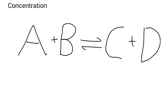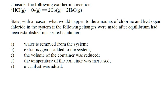Let's apply some of this knowledge to problems. Consider the following exothermic reaction — exothermic moving in the forward direction. State with a reason what would happen to the amount of chlorine and hydrogen chloride if the following changes were made after equilibrium was established in a sealed container. If you removed water from the system, the system will try to increase the concentration of water, so the equilibrium position would move towards the right. Therefore, the amount of Cl₂ would increase and the amount of HCl would decrease.